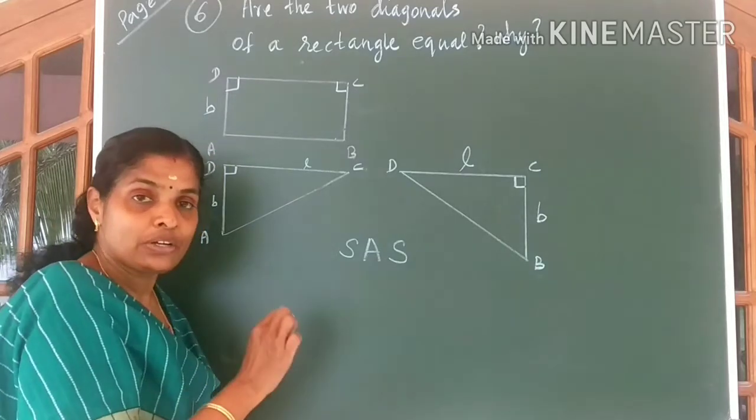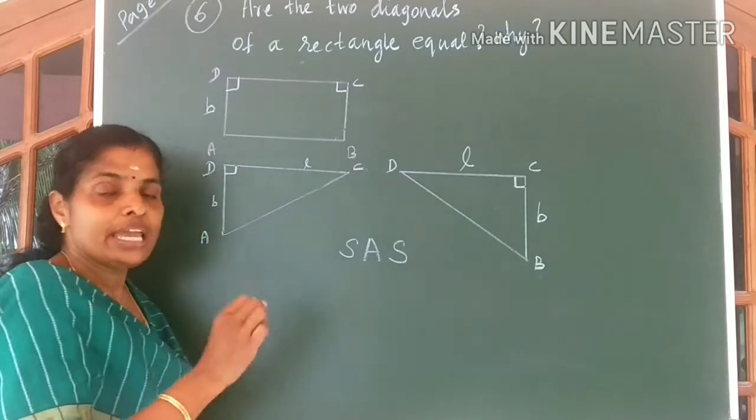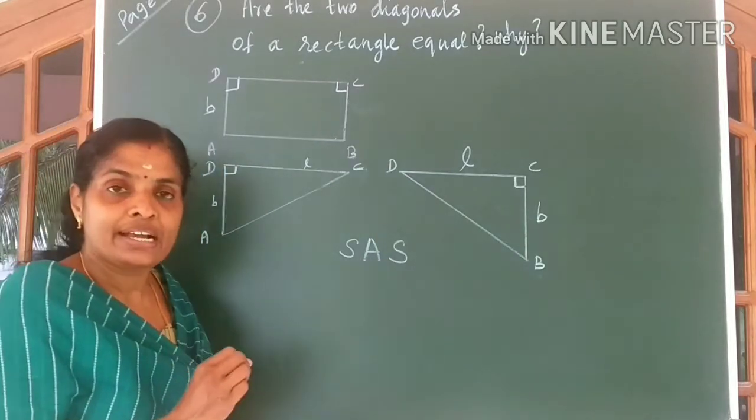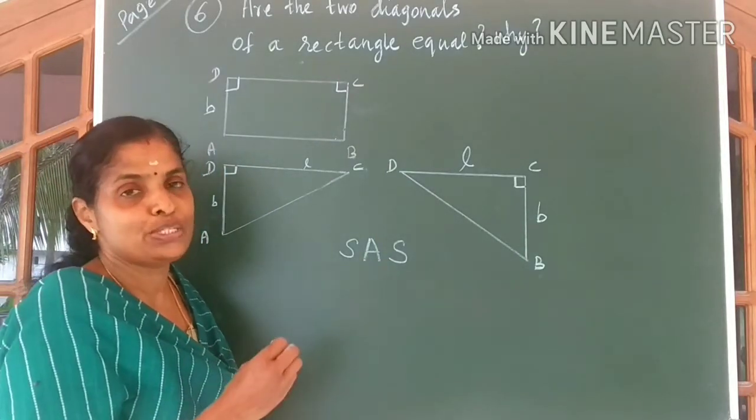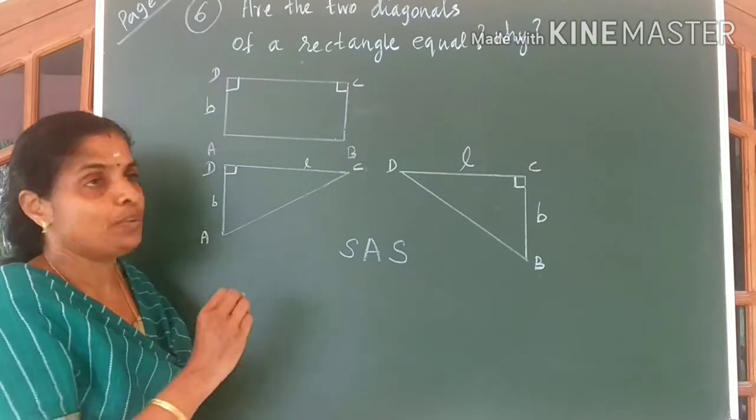Side, included angle, side. We can say the two triangles are equal triangles. If triangles are equal, what do you know children? We know sides opposite to equal angles are equal.